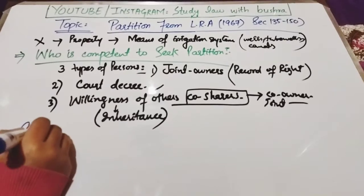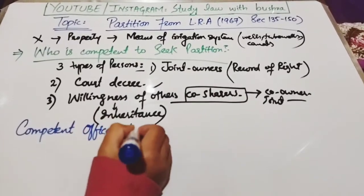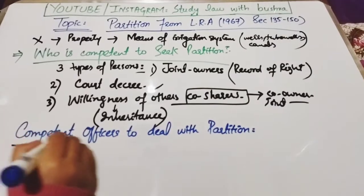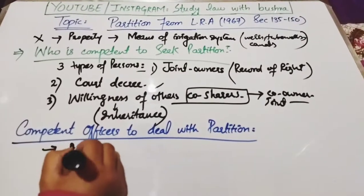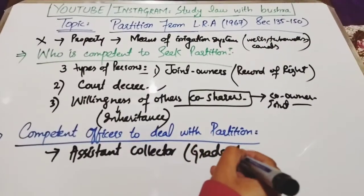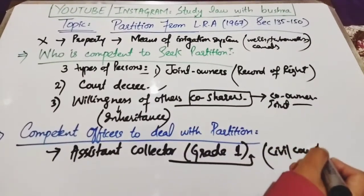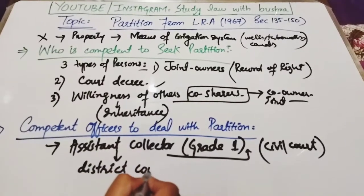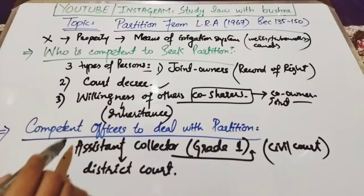اب جب یہ تین بندے apply کریں گے تو who is the competent officer to deal with the matters of partition؟ یاد رہے کہ Assistant Collector of Grade One وہ competent officer ہے جو partition process کے ساتھ deal کرے گا۔ وہ ایک civil court کی طرح act کرے گا، اور اس کی appeal directly district court میں جائے گی۔